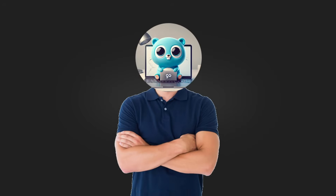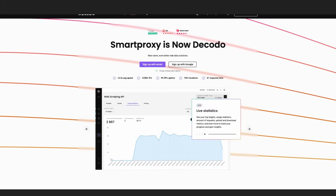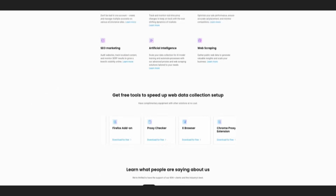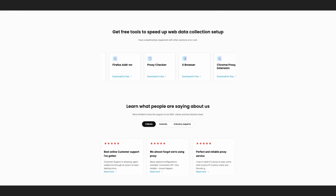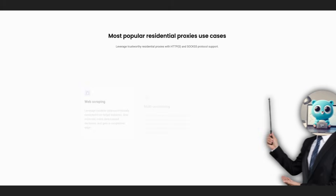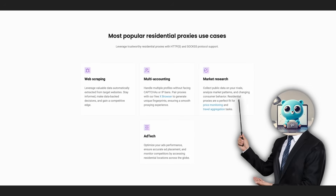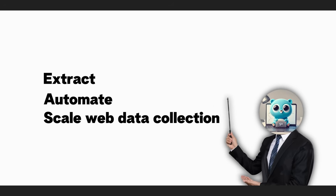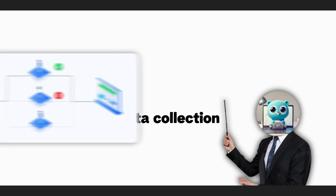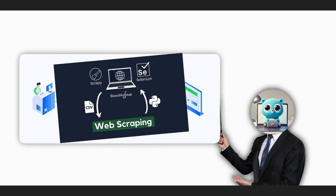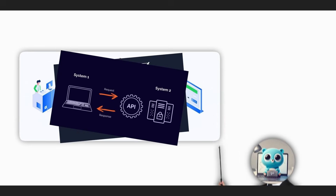And talking about proxy servers — thank you to Decodo for sponsoring this video, the most efficient and powerful way to access and automate web data collection. Decodo, formerly known as Smart Proxy, is a powerful developer-friendly platform that enables you to extract, automate, and scale web data collection using residential proxies, custom scraping scripts, or their universal scraping API.